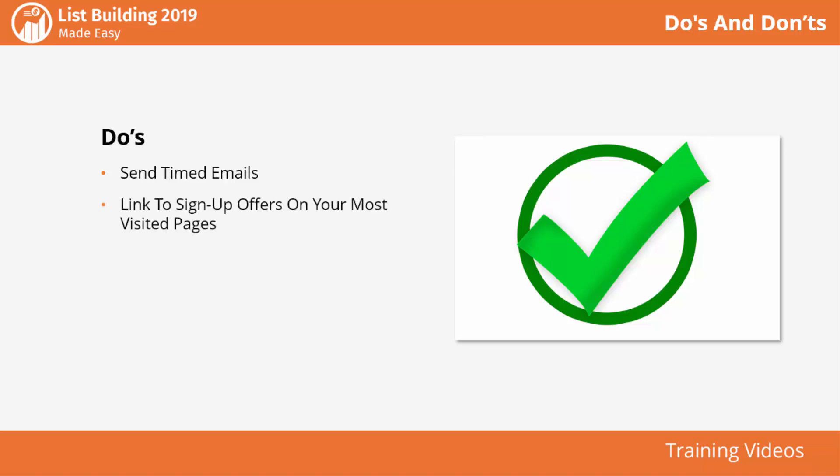Link to signup offers on your most visited pages: link signup forms to promote offers on some of the most visited pages on your site, including your home page and your about page. Split test campaign design and copy: make sure to test two or more variations of the copy and design on your landing pages.